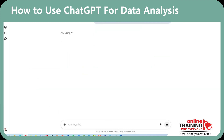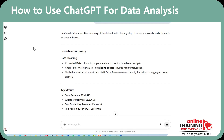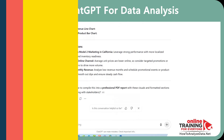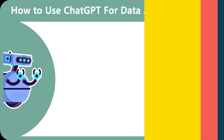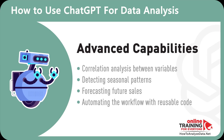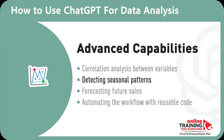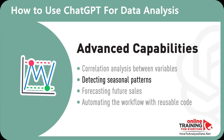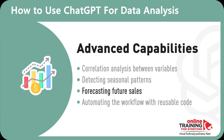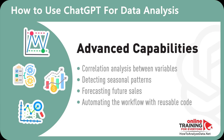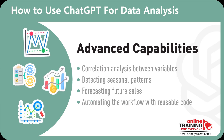Beyond the basics, ChatGPT 5 supports advanced features like correlation analysis between variables, detecting seasonal patterns, forecasting future sales, or automating the workflow with reusable code. Each one of these steps helps you go deeper and prepare for future decisions.